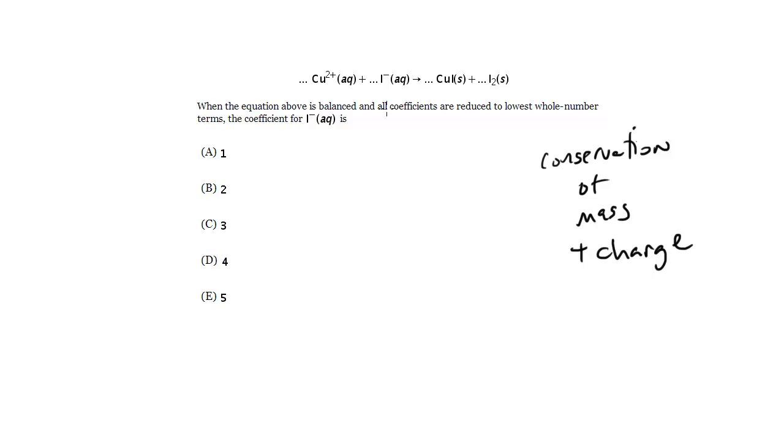When the equation above is balanced and all coefficients are reduced to lowest whole number terms, the coefficient for I minus aq is. Okay, so let's see what we've got here.